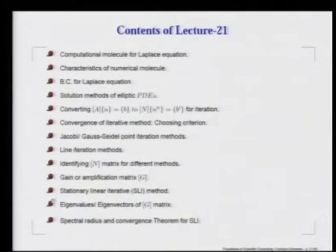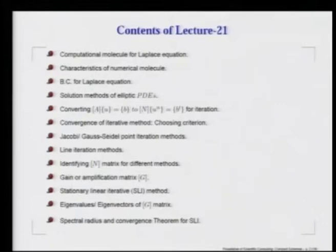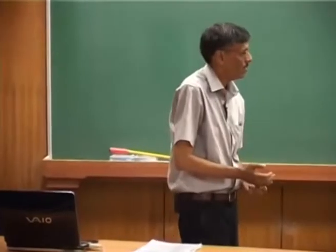We relate SLI method convergence rates with the eigenvalues and eigenvectors of the G matrix. What is important is the maximum eigenvalue of this G matrix, which we call the spectral radius. We then enunciate various convergence theorems for stationary linear iterative methods and discuss their ramifications. Shall we begin?